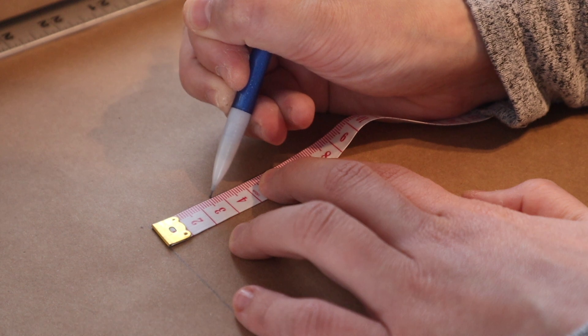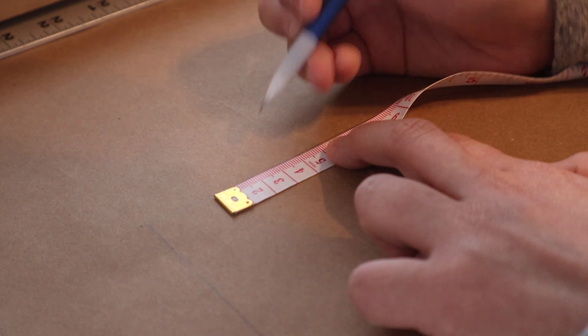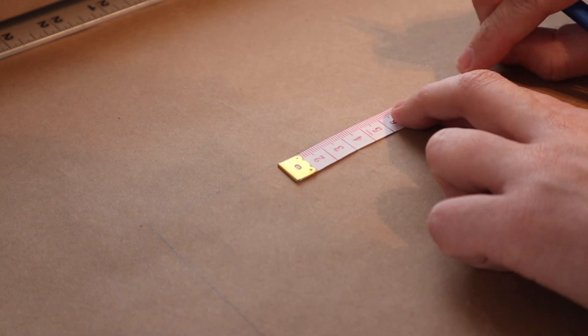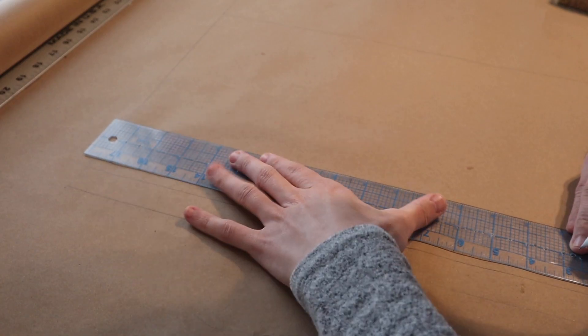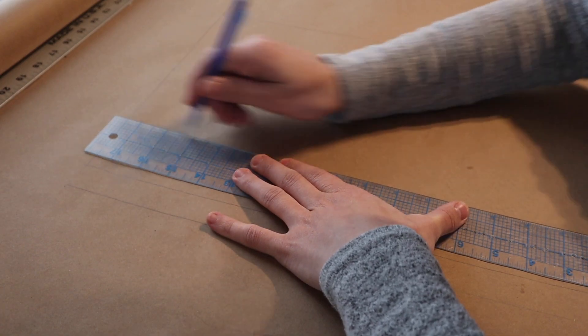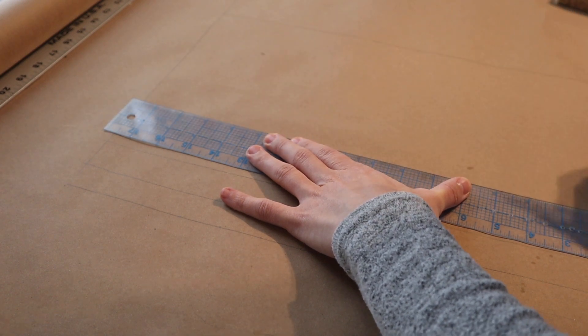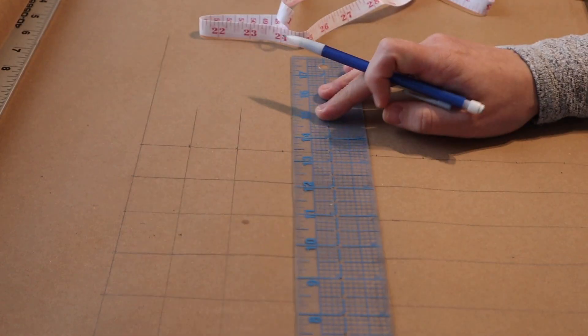I did this by measuring and marking out increments of 3.2 centimeters along a horizontal line, and then again on a perpendicular vertical line. I then drew vertical lines every 3.2 centimeters according to the marks I made. Next, I finished off the grid with horizontal lines made in the same way.